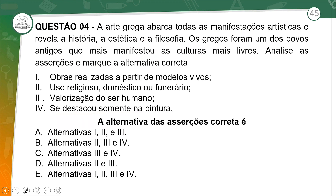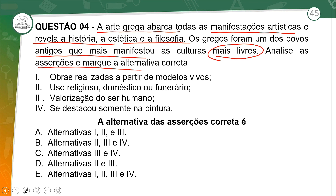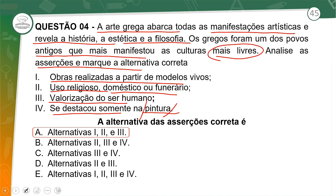Questão 4. A arte grega abarca todas as manifestações artísticas e revela a história, a estética e a filosofia. Os gregos foram um dos povos antigos que mais manifestou as culturas. As obras realizadas a partir de modelos vivos são características da arte grega. Uso religioso, doméstico ou funerário — também temos essas características. Valorização do ser humano se destacou somente na pintura? Não — também na arquitetura, escultura e pintura em vasos. A alternativa correta é 1, 2 e 3.